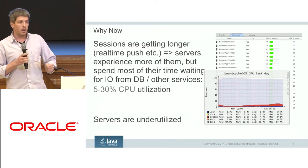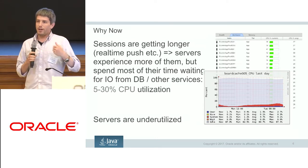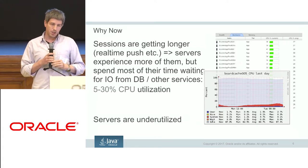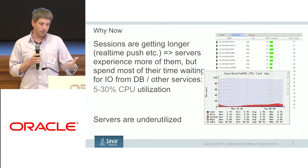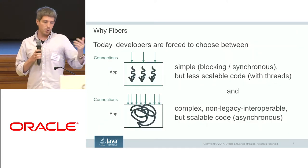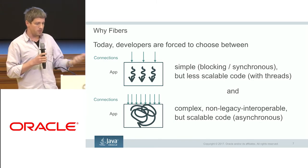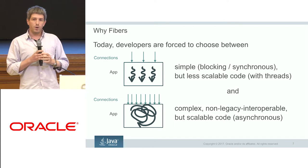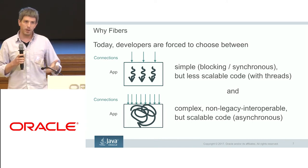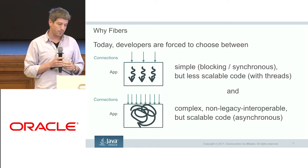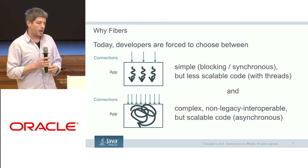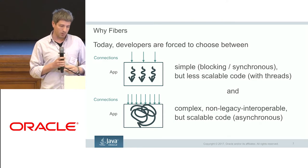So why do we want to do this now? Mostly, servers are now experiencing a much larger number of concurrent open connections. And it turns out that they spend much of their time just waiting for IO, and the utilization of hardware is generally very, very low. Developers have two options: either they write simple, easy to debug, easy to write, easy to understand code, which just assigns a single thread per socket. But this code is not very scalable because it's limited by the number of threads the operating system can manage. Or they can write scalable code that is asynchronous — it's complex to write, to understand, and to debug.